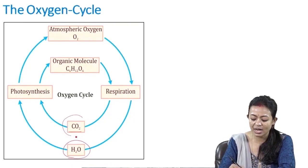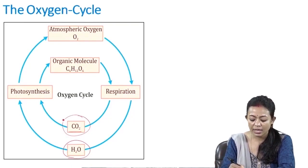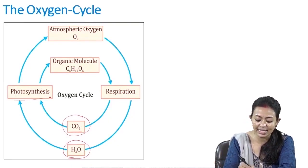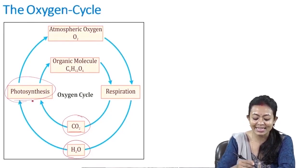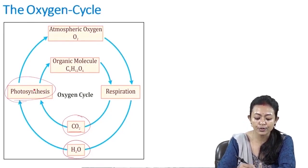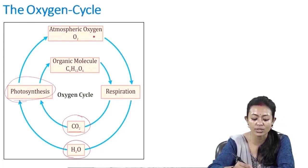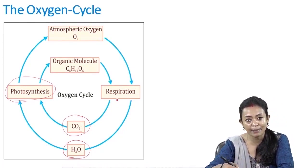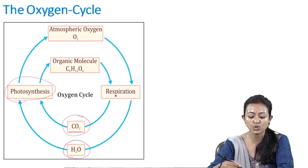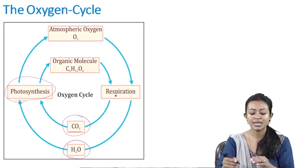When oxygen is utilized in respiration, carbon dioxide and water are given out. These two products — carbon dioxide and water — are then taken in by plants for photosynthesis. After photosynthesis, the plants give out oxygen back into the atmosphere.